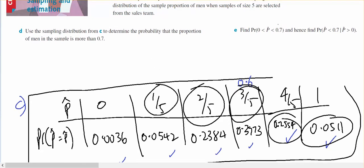So this is the same as 0.2, 0.4, 0.6, 0.8. Okay, so part D asks for the probability that the sample is more than 0.7.